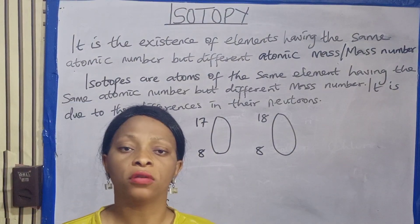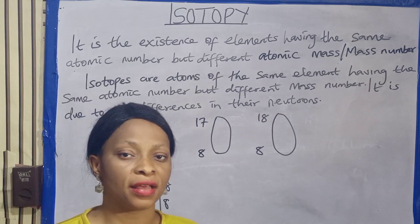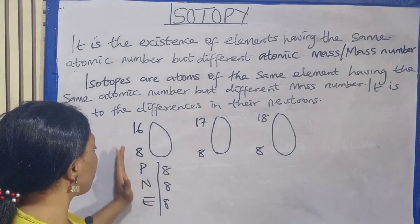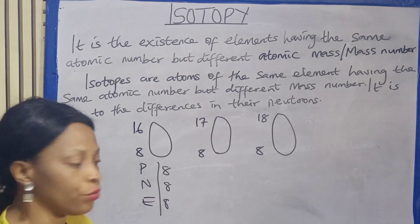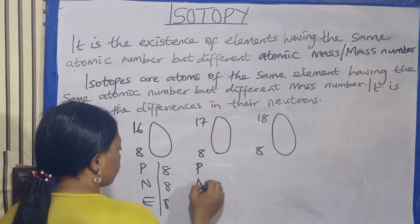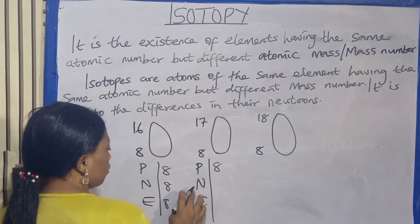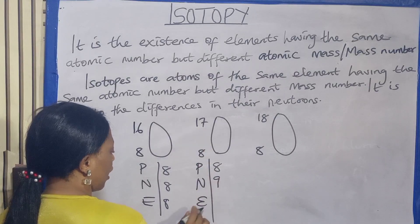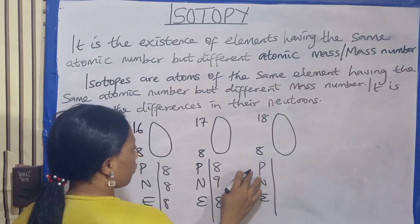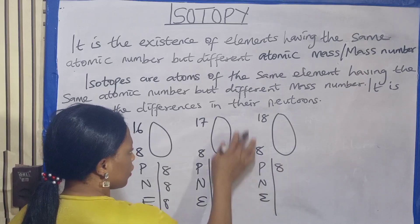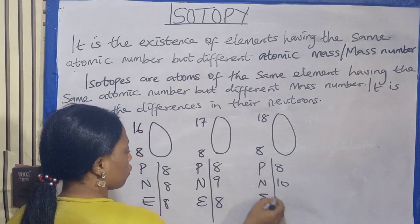If you have not watched our video on electronic configuration, kindly check the description box and the comment section — I will be dropping it there so that you will understand vividly how we achieve this proton, neutron, and electron. For Oxygen-17: the proton is 8, the neutron is 17 minus 8 = 9, and the electron is also 8. For Oxygen-18: the proton is 8, the neutron is 18 minus 8 = 10, and the electron is also 8.